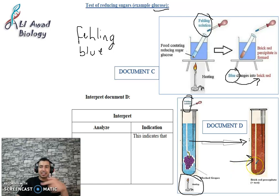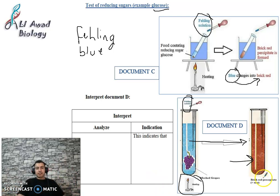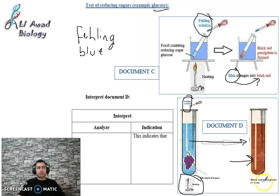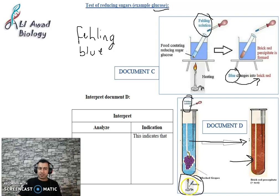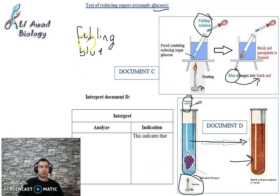If I take mashed grapes and add Fehling solution, after heating the color turns from blue to brick red precipitate — positive test. This means the food contains glucose. Negative test means the color remains blue, indicating no glucose. To analyze: brick red precipitate, positive test is obtained after adding Fehling solution to mashed grapes with heating. This indicates that grapes contain glucose, or reducing sugar.